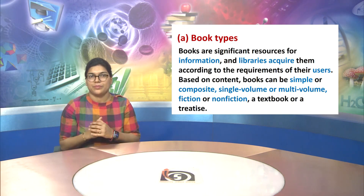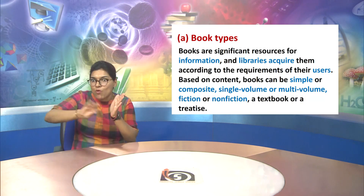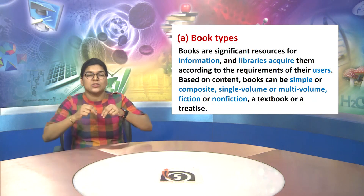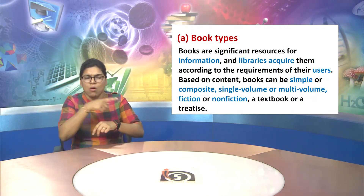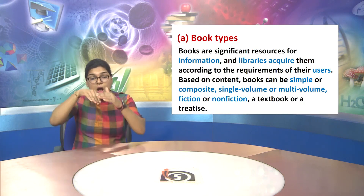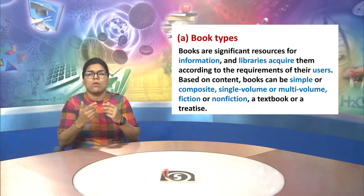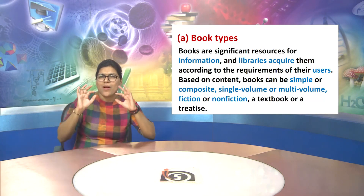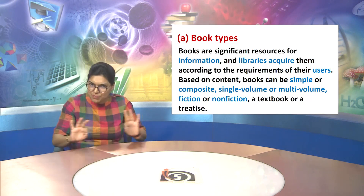Let us now understand the book types. Books are significant resources for information and libraries acquire them according to the requirement of their users. Based on content, books can be simple or composite, single volume or multi-volume, fiction or non-fiction, or a textbook or a treatise.